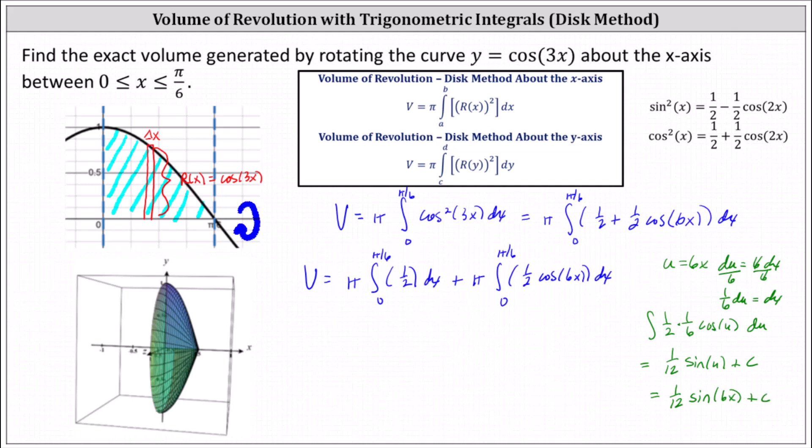So now let's determine the anti-derivatives. The integral of 1 half with respect to x is 1 half x. And now we know the anti-derivative of 1 half cosine 6x is 1 twelfth sine 6x.